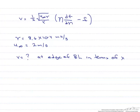But first, let's recall that the edge of the boundary layer is when the velocity is 99% of the free stream velocity. Or we can write this in its dimensionless form: u over u infinity equals 0.99.